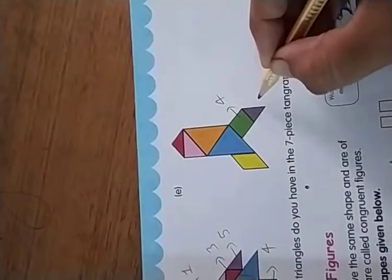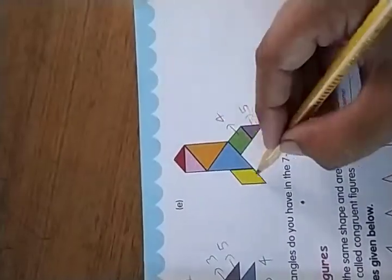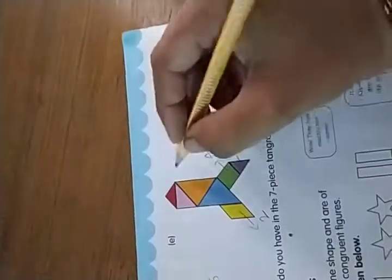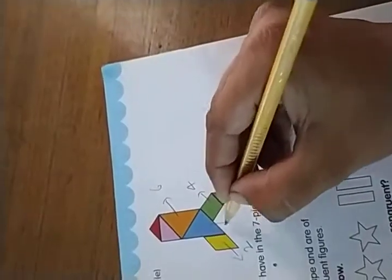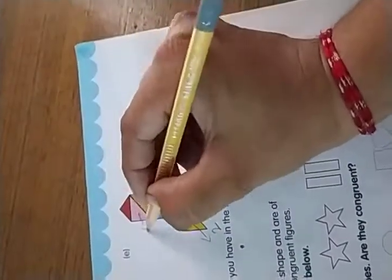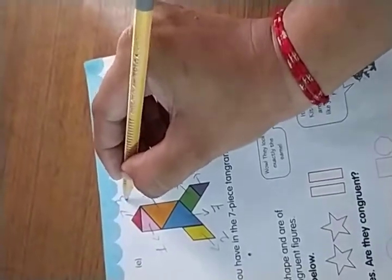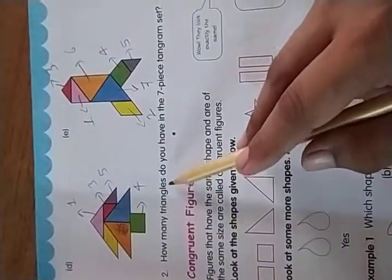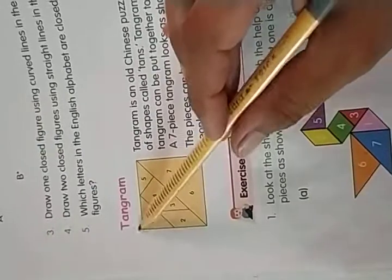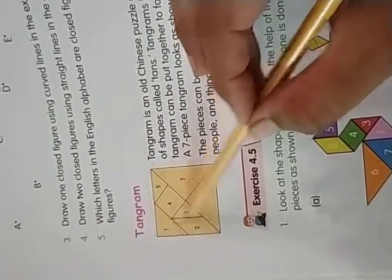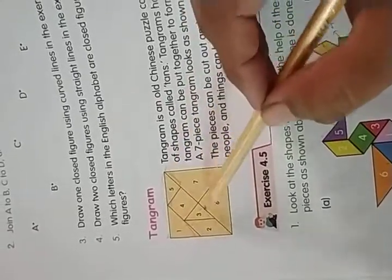Similarly in this question, square 4, purple 5, and this shape 2. 2 triangle, here 3 triangle, 4 triangle, and 5 triangle. How many triangles? Total 5 triangles are here.